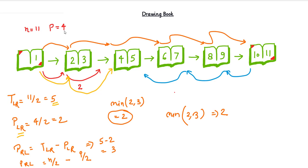Here we are calculating how many turns are required from the front side to reach a particular target location, and how many turns are required to reach the end from the front side. To get the turns from the back side, we subtract the target turns from the total. We use the front side as our base because it always starts from page one, whereas the back side is uncertain. We subtract total turns to target from total turns to end to get the back-side turn count.